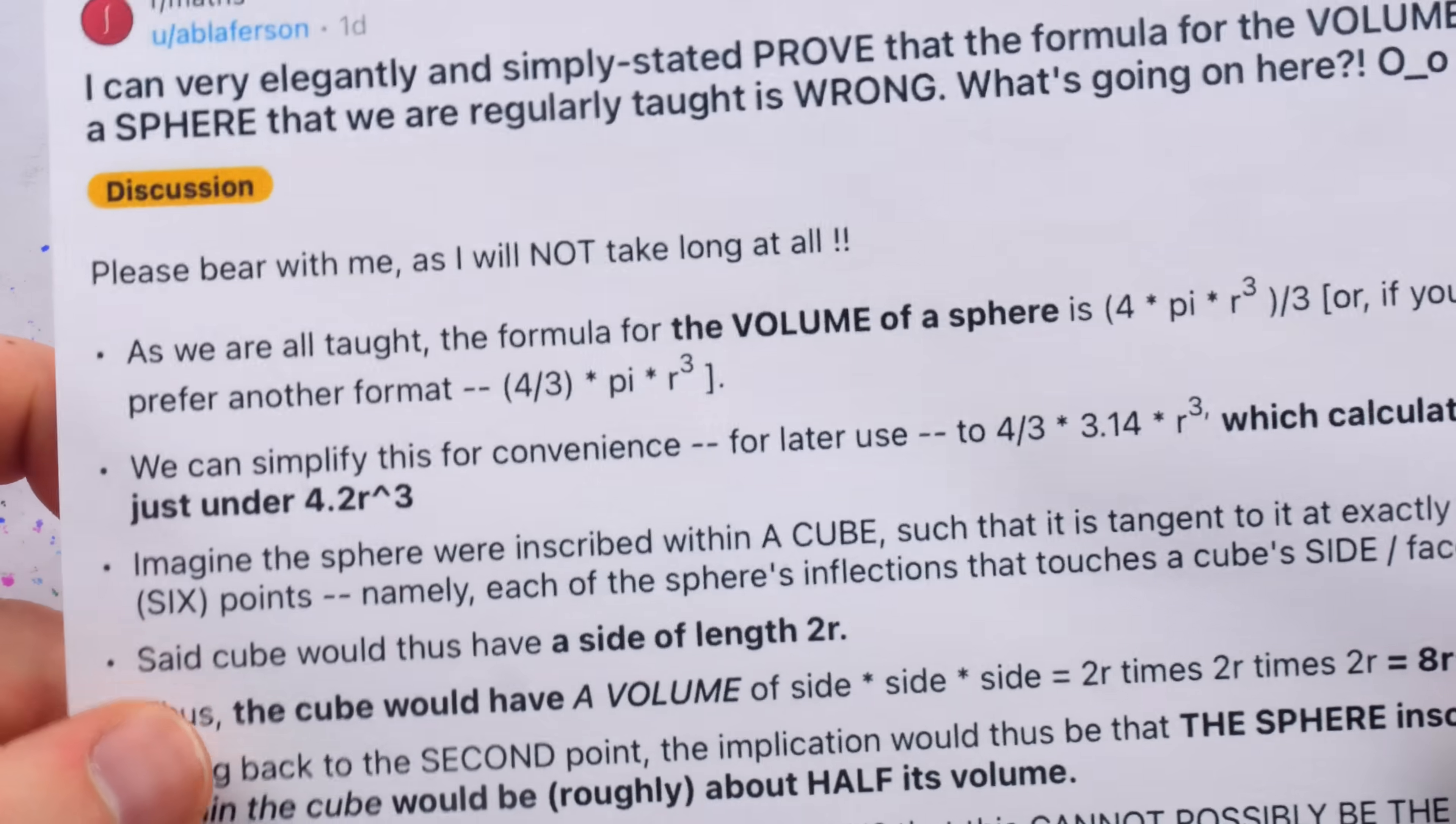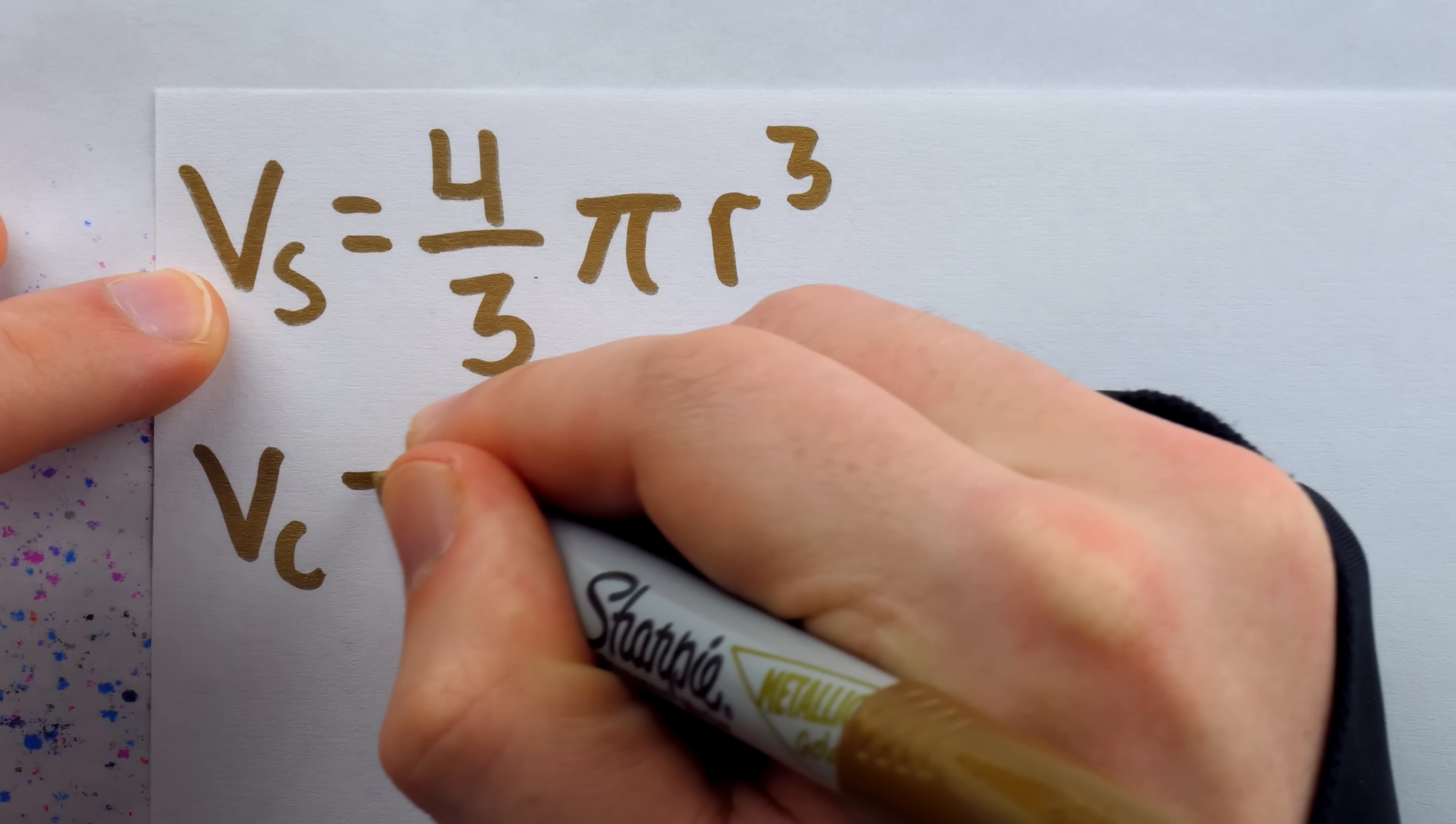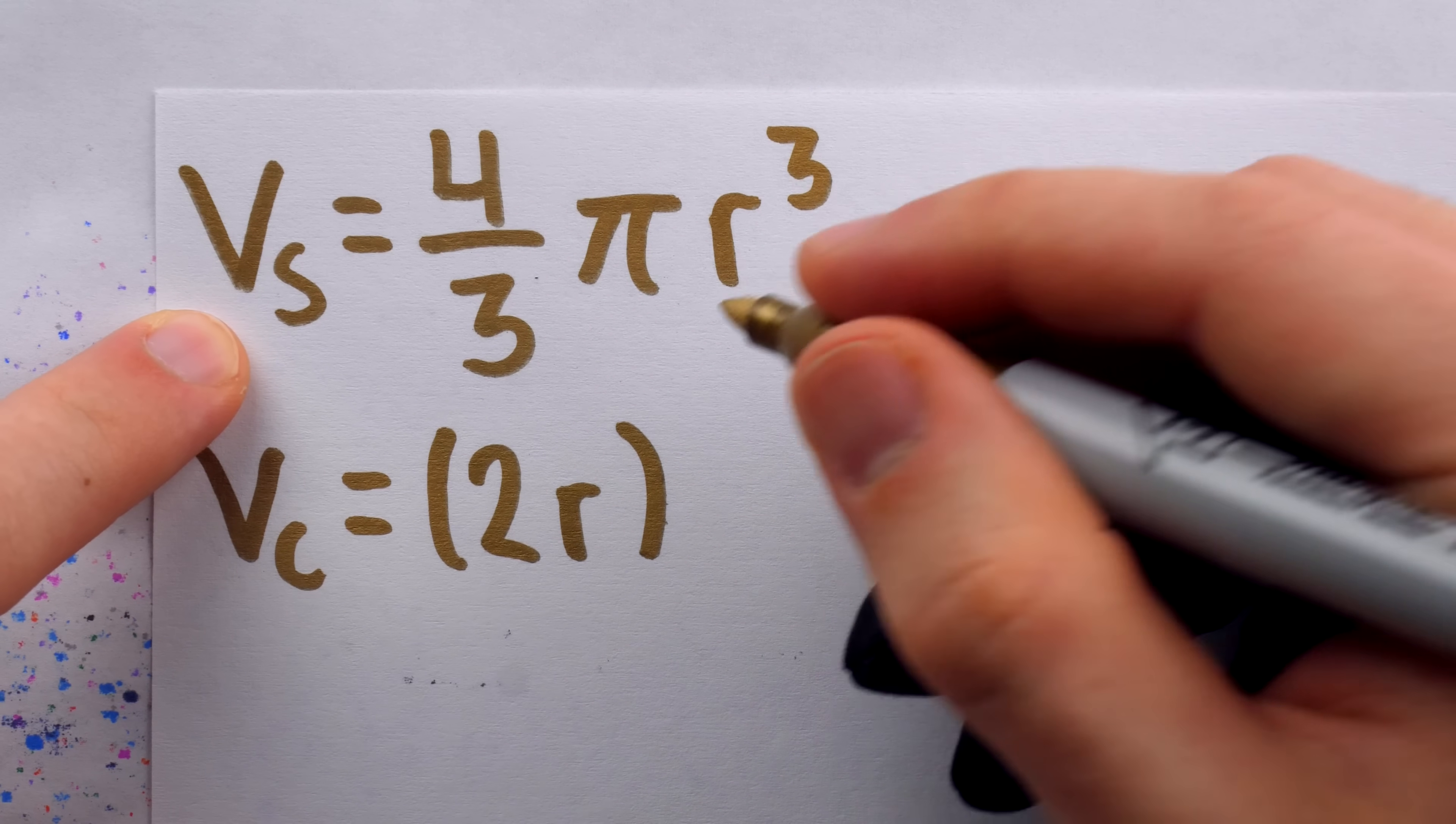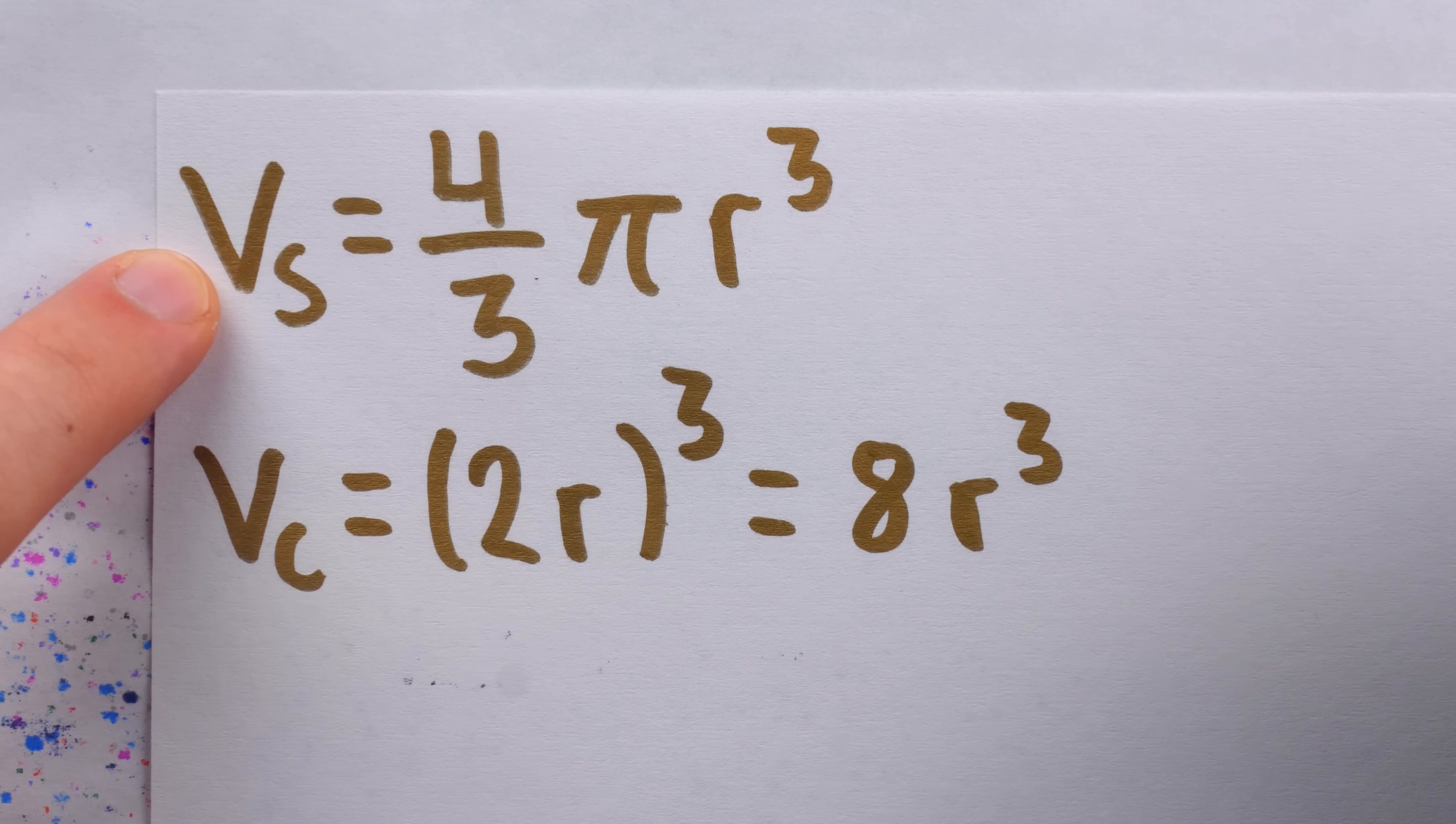With that in mind, the simply stated prove goes on to calculate the volume of the cube in terms of that radius r. The volume of a cube is the side length cubed. The side length we've just established is 2 times the radius r. 2 cubed is 8, and r cubed we will leave as r cubed.